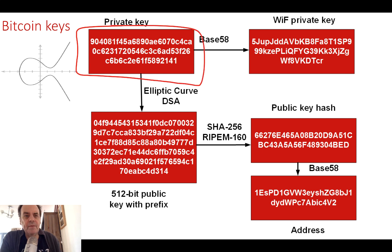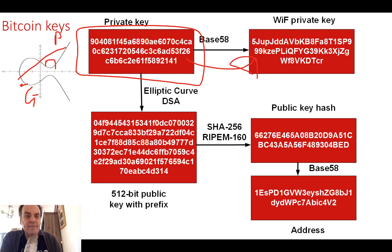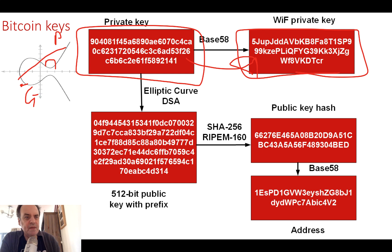For Bitcoin key generation, we have a random number, and as noted we have a point G on the elliptic curve. We then produce our P value from that. n is our private key. We then convert that into what's called base 58, which converts it into a form which is easy to register — that becomes our private key. From here we create our public key.